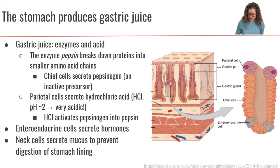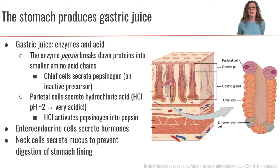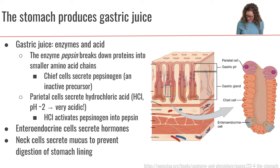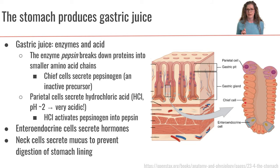There are different types of cells that line the mucosa layer of our stomach. One type is called a chief cell, and these chief cells are responsible for making pepsin. However, chief cells make pepsin in a specific way — they secrete something called pepsinogen, which is an inactive precursor to pepsin. In this picture we can see the orange chief cells secreting pepsinogen into the lumen of the stomach.